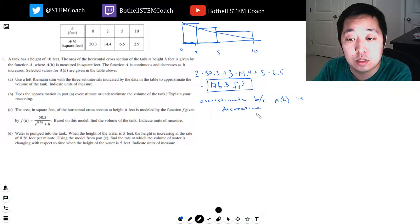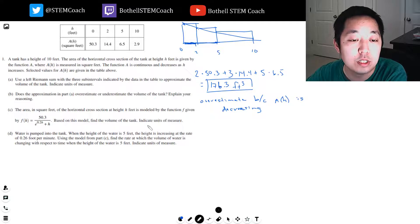The area in square feet of the horizontal cross-section at height H is modeled by the function given by that. Based on the model, find the volume of the tank. Integrate, indicate the units of measure.